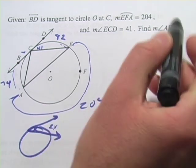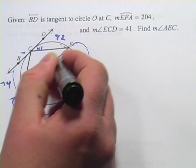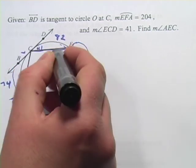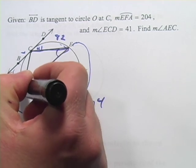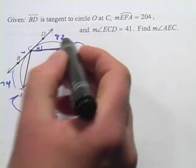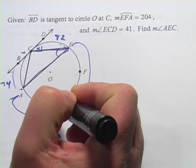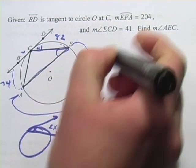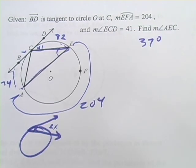And we want to find AEC, which is this angle here inside the triangle. And what you'll notice is that that angle there intercepts this arc, 74. And it's an inscribed angle, so it's going to be half of that arc length. So that is going to be 37 degrees. So that's a little bit of work with some of the properties of lines that are tangent to circles.